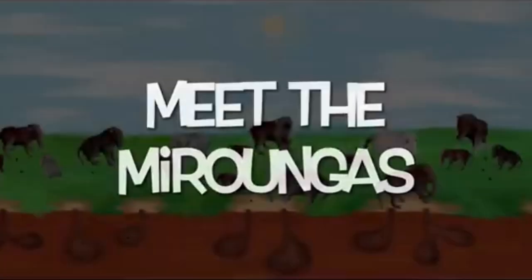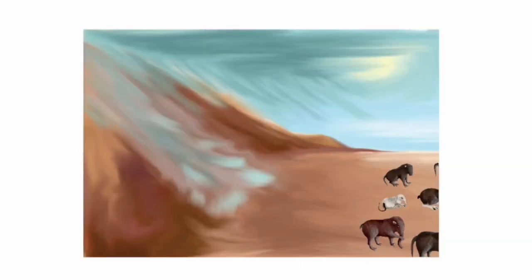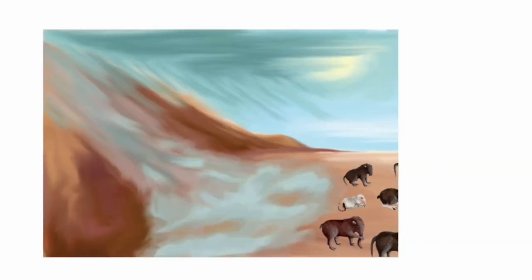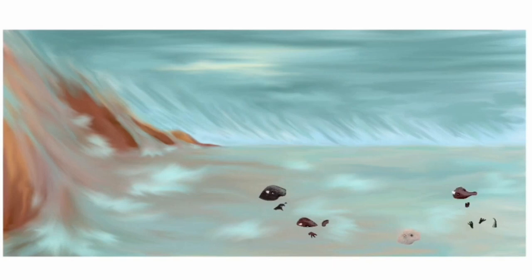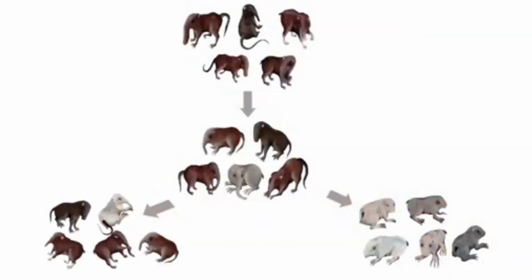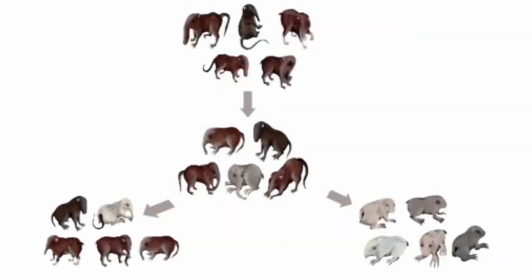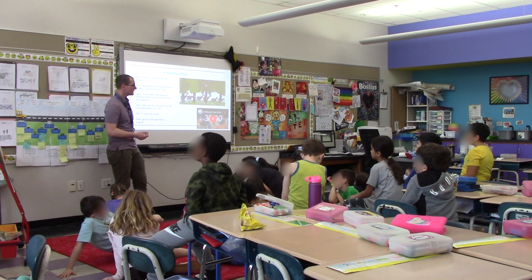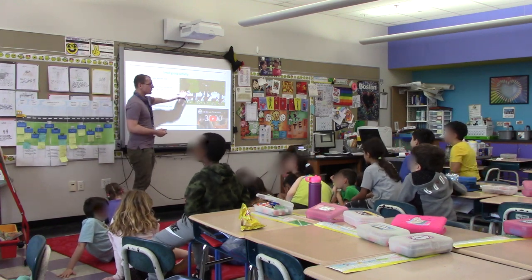Next, students follow the fate of another population of Pelosis, where the environment changes dramatically and isolates a subpopulation of animals. They find that in this case, the model explains how a new species — the morungas — come into being.